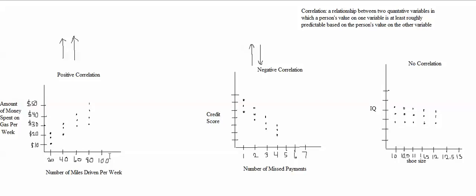If the person tells me that they're driving 100 miles per week or 200 miles per week, I'll think that person is probably spending more money on gas. So if the person tells me how much driving they're doing per week, I won't be able to predict exactly how much money they're spending on gas, but I'll be able to make at least a rough prediction. The reason why I can make that rough prediction is because there's a correlation between number of miles driven per week and amount of money spent on gas per week.